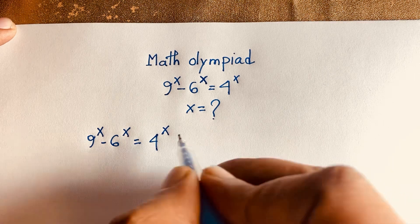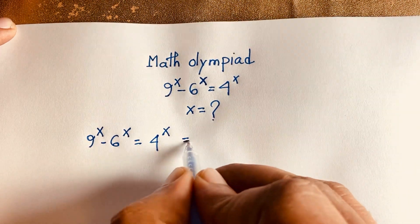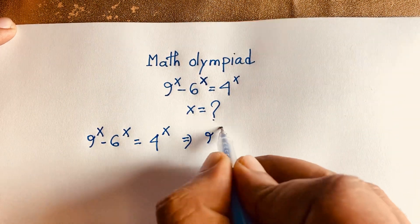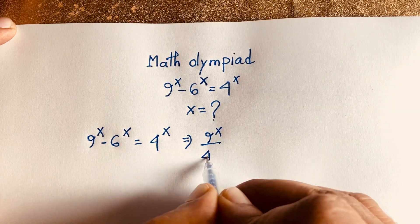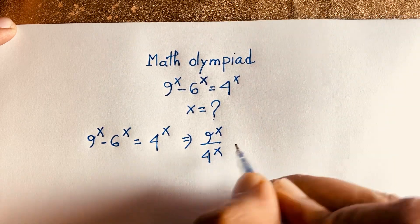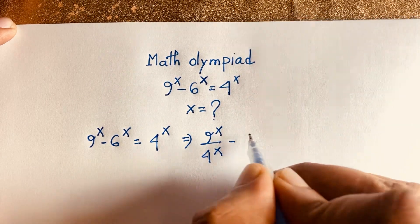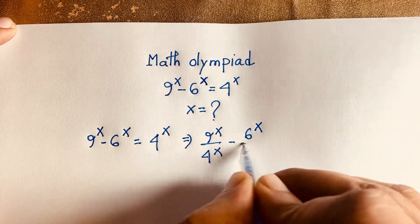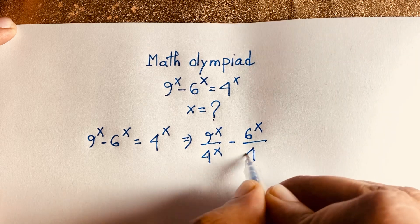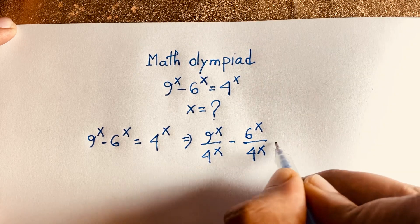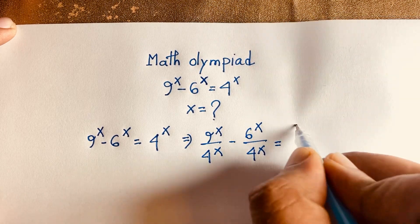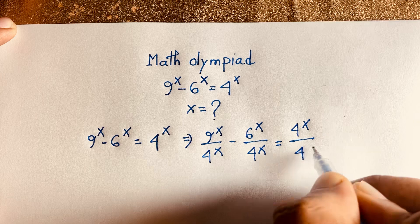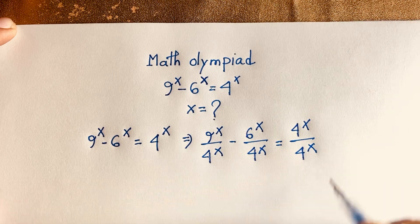Now I divide both sides by 4 to the power x. This gives us 9 to the power x over 4 to the power x, minus 6 to the power x over 4 to the power x, is equal to 4 to the power x over 4 to the power x.